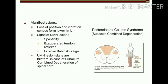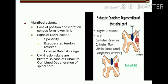Manifestations include loss of position and vibration sensation from the lower limb. The person also shows signs of upper motor neuron type lesion: spasticity, exaggerated tendon reflexes, and positive Babinski sign. Unlike a typical upper motor neuron lesion where symptoms appear on the side of the affected tract, in subacute combined degeneration the upper motor neuron type signs are seen bilaterally.